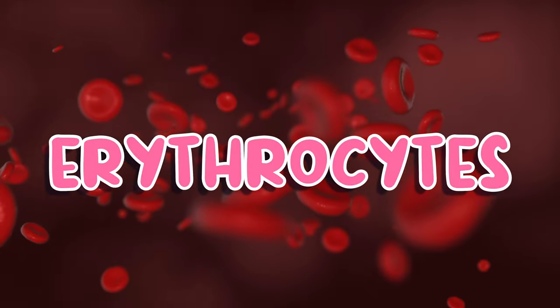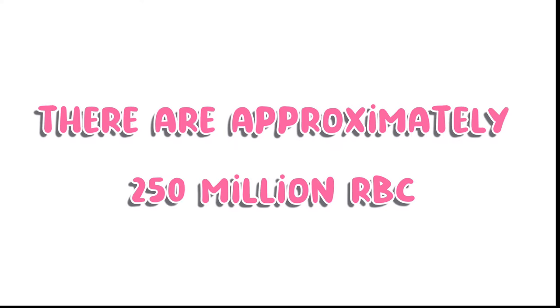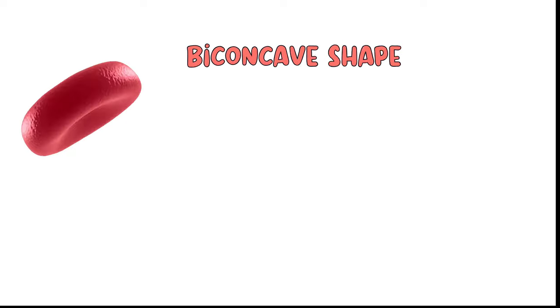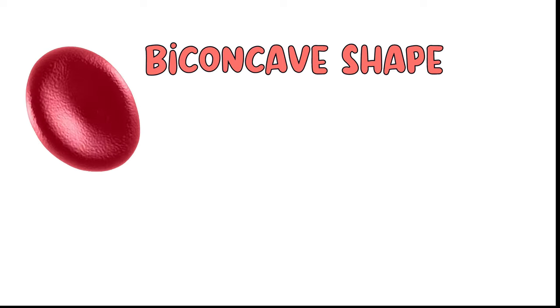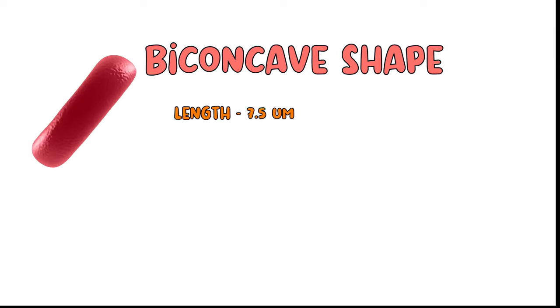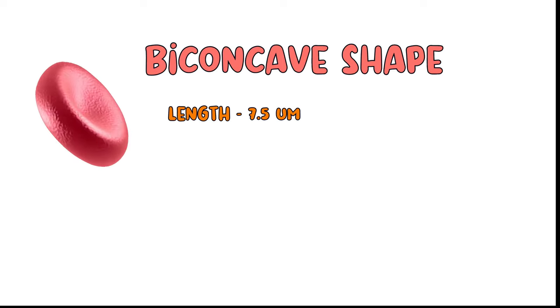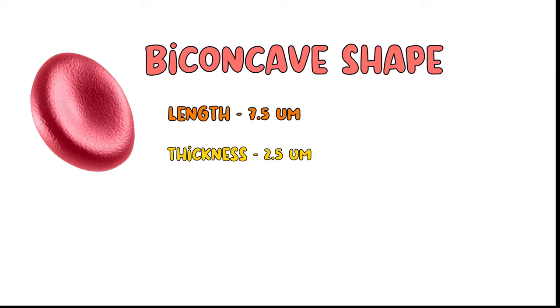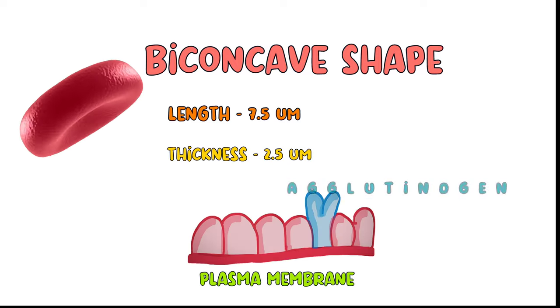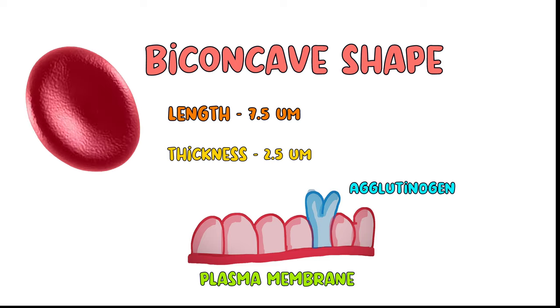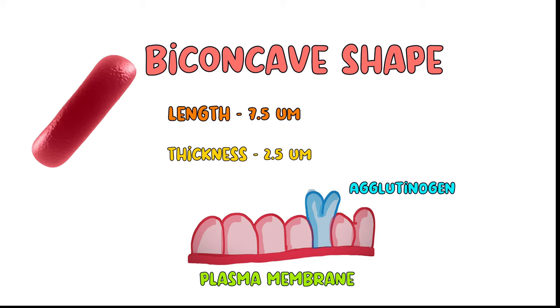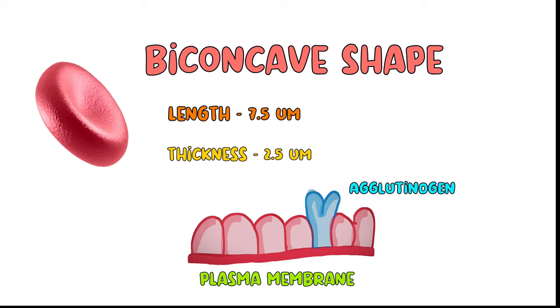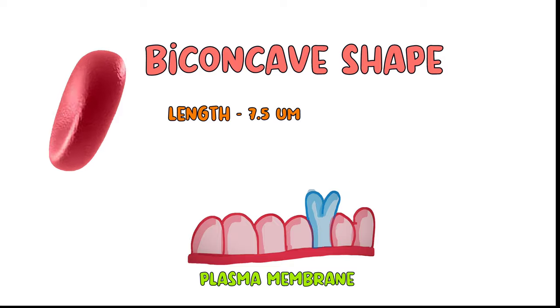Red blood cells are known as erythrocytes and there are approximately 250 million of them. An erythrocyte is biconcave shaped, having a length of 7.5 micrometers and a thickness of 2.5 micrometers. The membrane is made up of a plasma membrane which has agglutinogen — a protein that acts as an antigen.